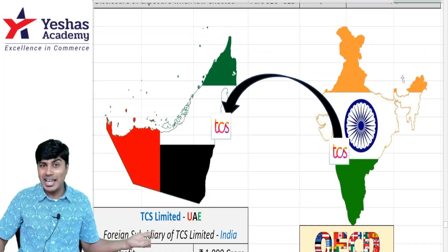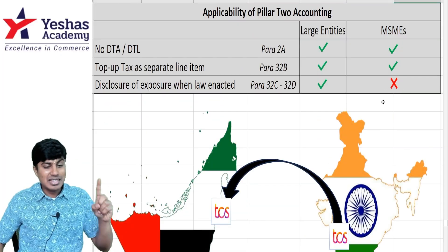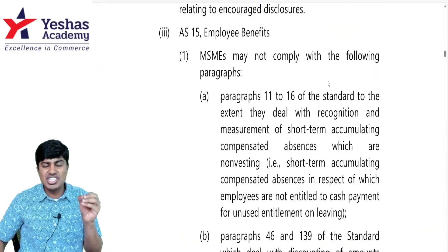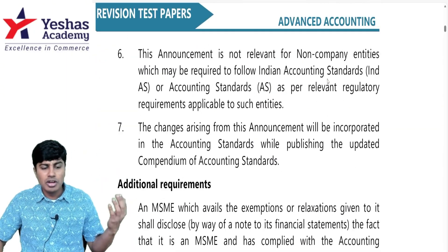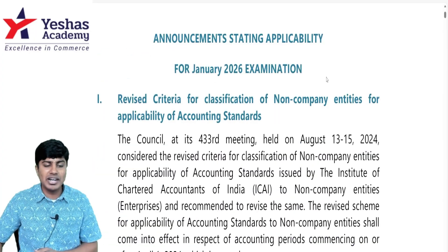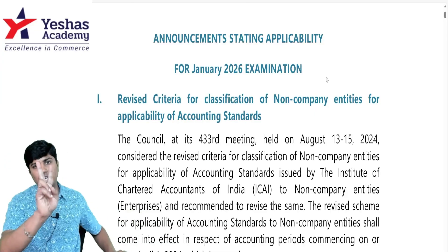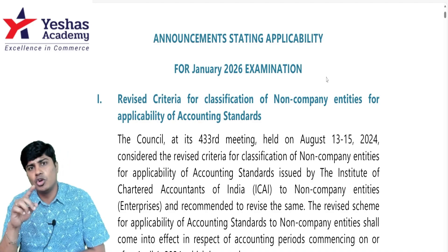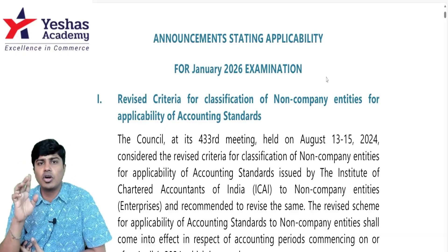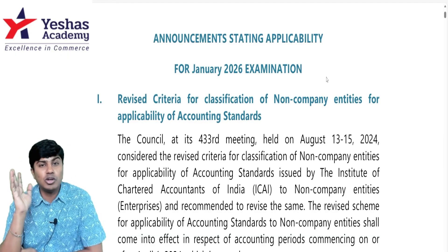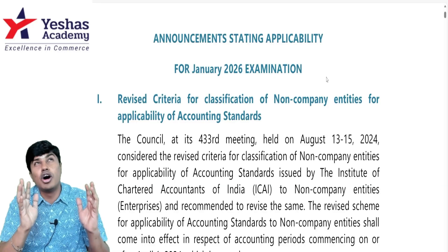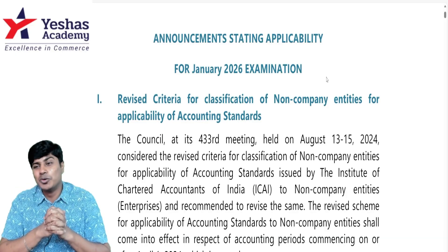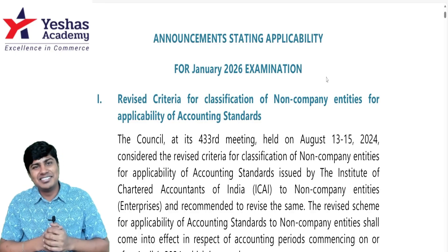This is the entire concept of OECD — I hope it was helpful. One last important point: this is not the only amendment in the Jan 2026 RTP. There is another amendment on the change in classification of non-corporate entities regulated by ICAI — from level 1/2/3/4 to just large entities and MSMEs. That was applicable from September 2025 as well. I've uploaded a separate video on that — link in the description or i-card. I hope your preparations go well. Wishing you great success in the upcoming examination. Stay in the game.